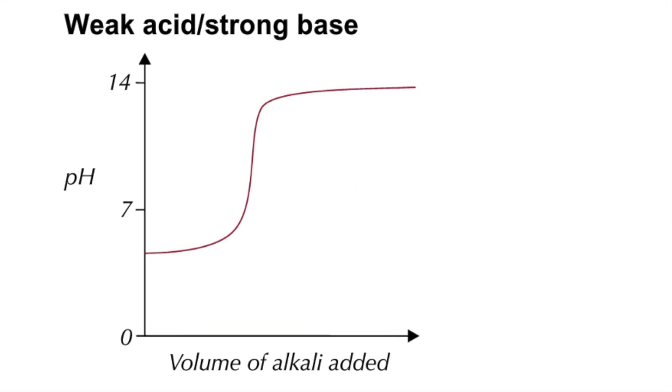Weak acid, strong base now. Weak acid because the pH is higher than 1 or 2 but lower than 7, and strong base, the pH is finishing quite high. The pH at equivalence now is greater than 7.